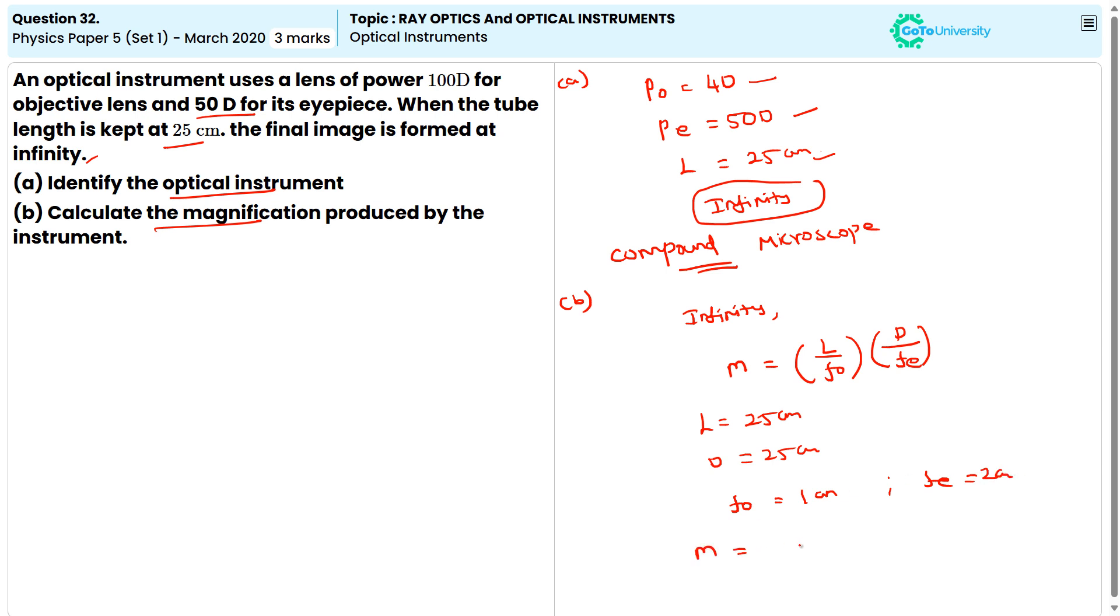So, we get M equal to 25 by 1, into 25 by 2. So, if you simplify this, M is equal to 312.5. So, this is the required magnification produced by the instrument.